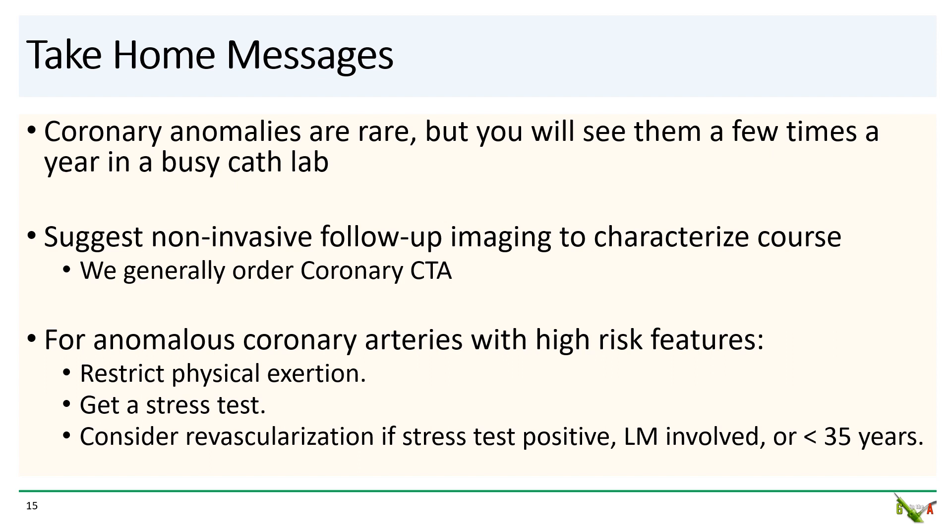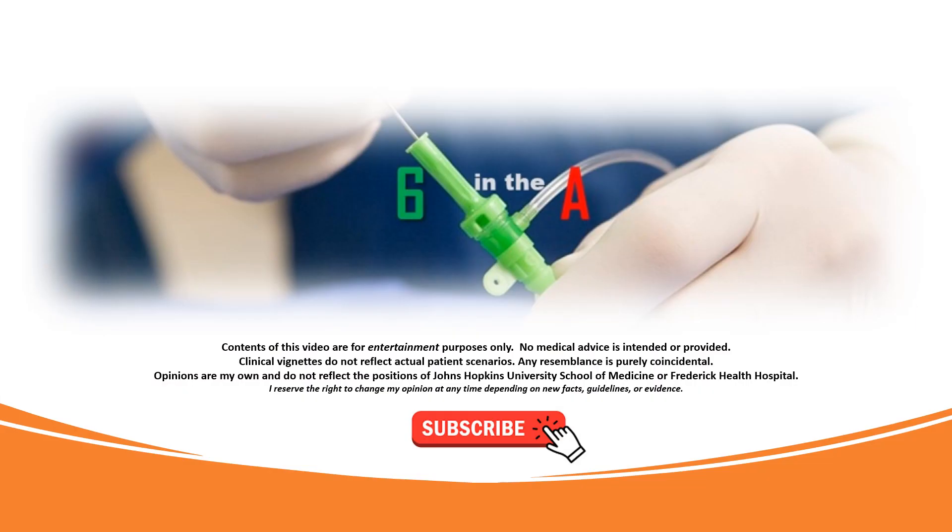Take-home messages: Coronary artery anomalies are rare, but if you work in a busy cath lab, you will see them a few times a year. Follow-up imaging to characterize the three-dimensional course is usually suggested — at our center, we generally order a coronary CTA. If the anomalous coronary artery has high-risk features, restrict physical activity and get a stress test. Consider revascularization if the stress test is positive, if the left main coronary artery is involved, or if the patient is young. There is not a lot of clinical data for managing coronary artery anomalies, so obviously all cases should be considered on an individual basis. Thank you for watching.